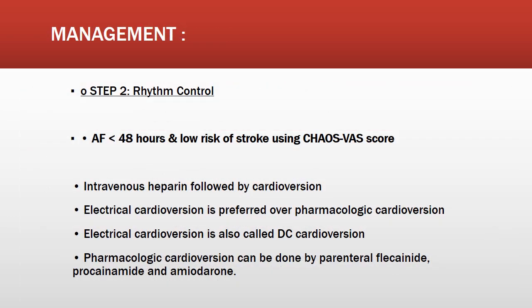For rhythm control, if AF onset is less than 48 hours and there is low stroke risk by CHA₂DS₂-VASc score, give IV heparin followed by cardioversion. Electrical cardioversion (DC cardioversion) is preferred over pharmacological cardioversion. Pharmacological cardioversion can be done using parenteral flecainide, procainamide, or amiodarone, which are all anti-arrhythmic drugs.